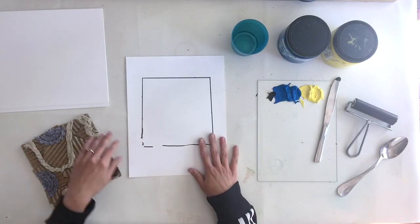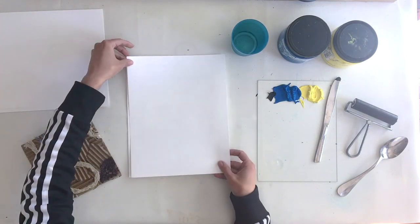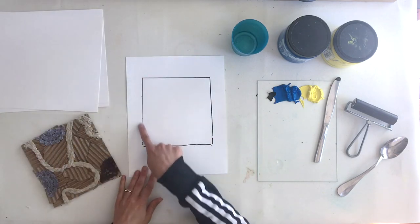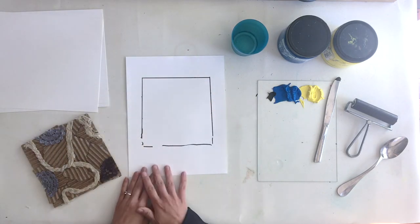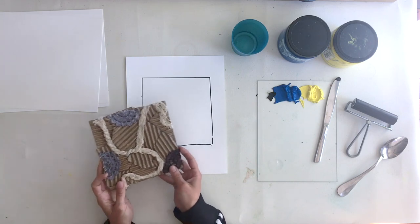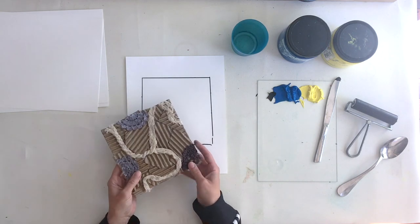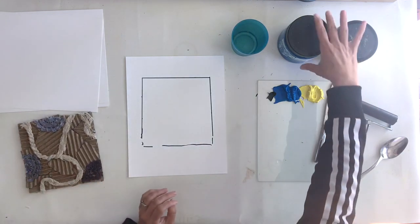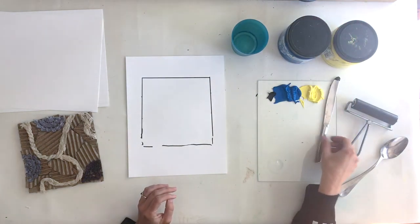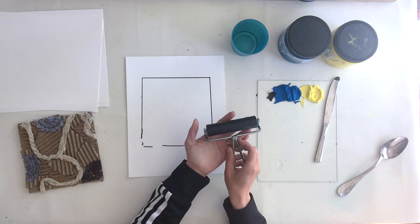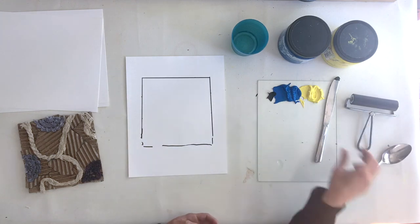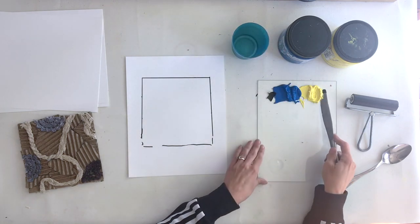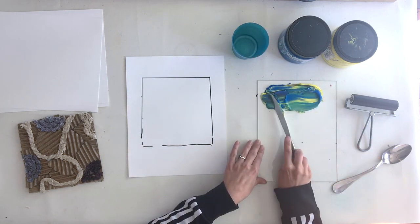To print, I'll use a registration template the same size as the paper that I'm printing on. Like before, I have traced my block onto the registration template. I will need my completed block, nice and dry, inks made especially for block printing, butter knife to mix the ink, a brayer, spoon for burnishing, and now I've got a cup of water to thin any of the ink if I need to. A spray bottle also works to do this. I will mix the ink on my plexiglass.